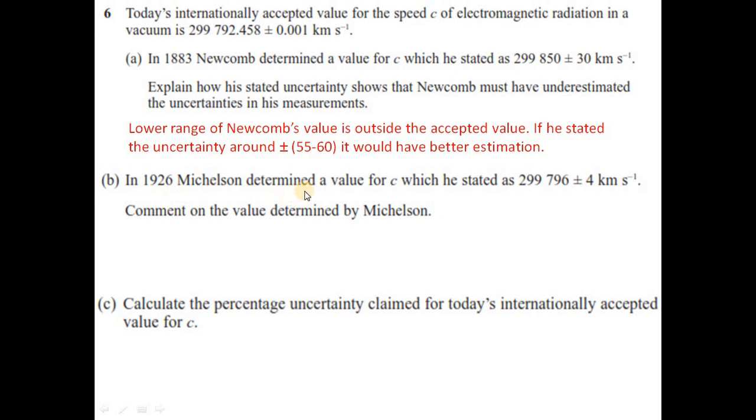In 1926, Michelson determined a value for C, which he stated as 299796 plus minus 4 km per second. Comment on the value determined by Michelson. If you find the range of Michelson value, which is 299792 lower range and 299800 upper range. The lower range is within the range of your accepted value. That means Michelson value for C is much better than the Newcomb value. And also, it has a small uncertainty compared to Newcomb.